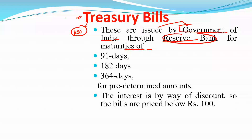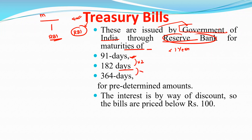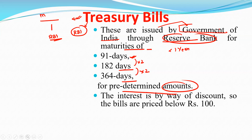You have to remember that treasury bills are a money market instrument. They are issued by the government of India through the Reserve Bank of India for maturities of less than one year — basically 91 days, 182 days, or 364 days maturity, for predetermined amounts.